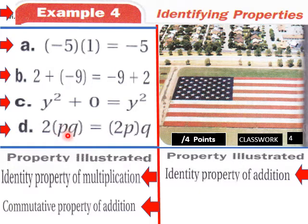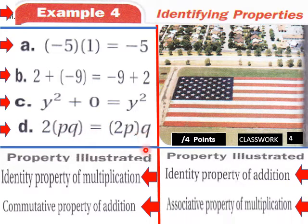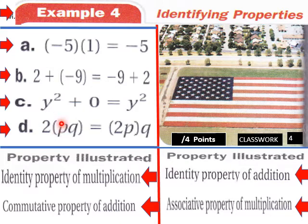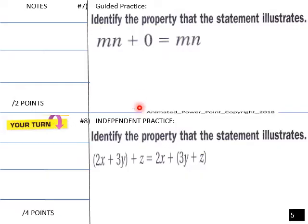For part d, two times pq equals two p times q. That property is the associative property of multiplication. We're regrouping — putting the two and p together, with q by itself — and you still get the same product. Let's try one: identify the property that the statement illustrates.